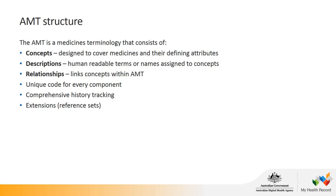Now let's talk about the structure of the AMT. At its core, the AMT comprises three core components: concepts, which are designed to cover medicines and their defining attributes; descriptions, which are human-readable terms assigned to the concepts; and relationships that link the concepts together. Every one of these components has a unique identifier associated with it. There is a comprehensive history tracking mechanism so that all changes made within the terminology are recorded and tracked over time. The AMT also has extensions, which is a way of adding more information to the core components, achieved through reference sets.